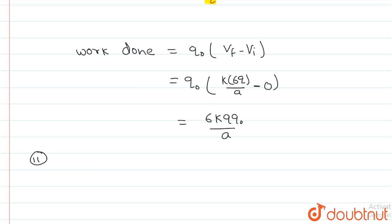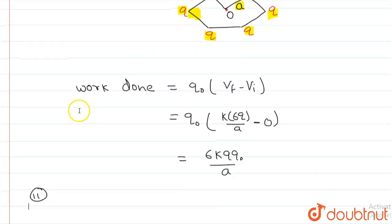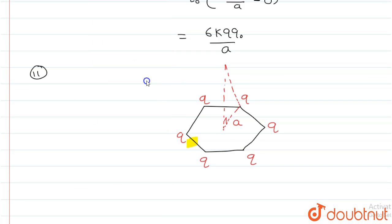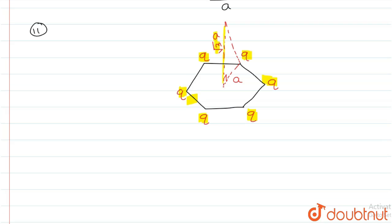Now, come to the second question. This is a regular hexagon and charged particles are placed at each corner. This distance is root 3a. This distance is root 3a, and this distance is a. This line is perpendicular to this line, so this distance will be 2a.